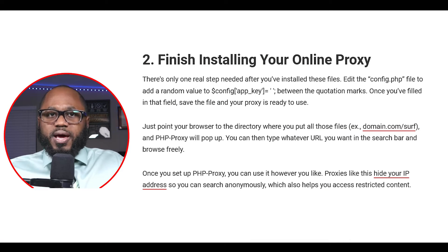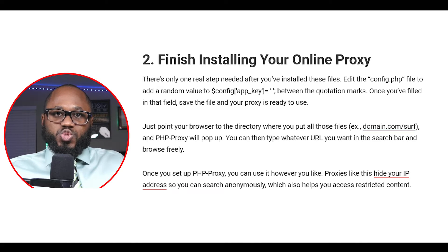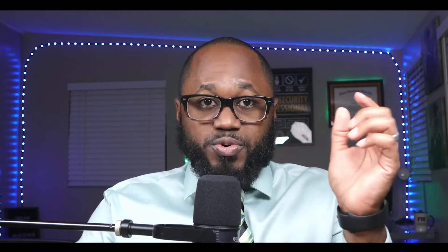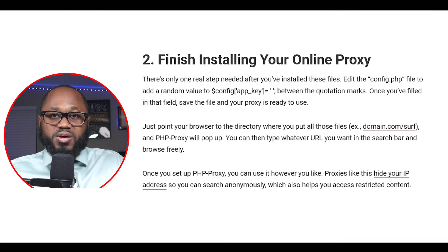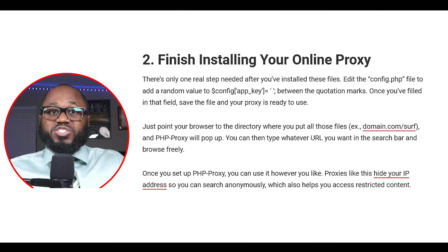Number two: finish installing your online proxy. There's only one real step needed. After you've installed the files, edit the config.php file to add a random value to the code between the quotation marks. Once you've filled in that field, save the file and your proxy is ready to use. Just point your browser to the directory where you put the files — for example, exampledomain.com/surf — and PHP Proxy will pop up. You can then type whatever URL you want in the search bar and browse freely.